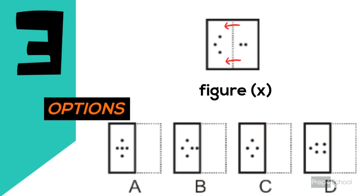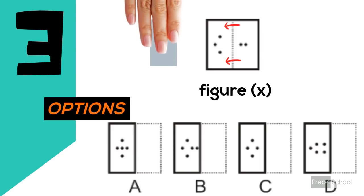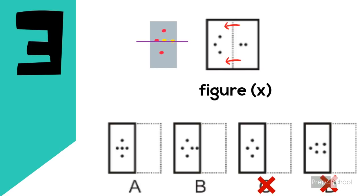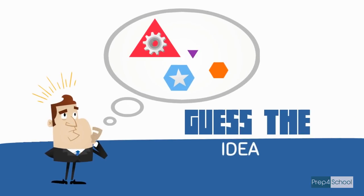Third problem: when you fold along the dotted line, the right side dots come to the left side. These three dots are in the same line. Checking the options — in A and B, these three dots are in a same line, whereas in C and D they are different, so C and D can be eliminated. But in option B, the dots are too close to the dotted line — they must be at some distance — hence option B is also incorrect. The answer is option A.